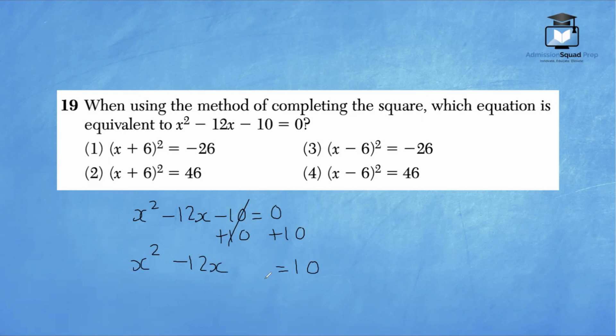I usually like to leave space here because we're going to have to complete the square. So our goal here is to add B over 2 squared to both sides. We're adding B over 2 squared to both sides. So what's B? B is negative 12. We have negative 12 divided by 2 squared. Negative 12 divided by 2 is negative 6 squared, which is 36. So our goal is to add 36 to both sides.